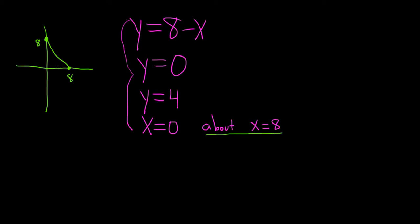y equals 0 is a horizontal line, x equals 0 is a vertical line, and then y equals 4 is right about here. So we're looking at this region here.